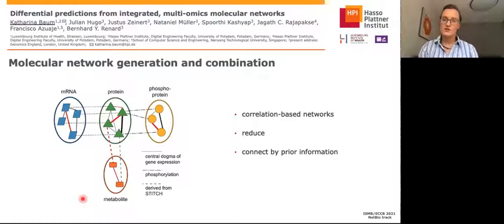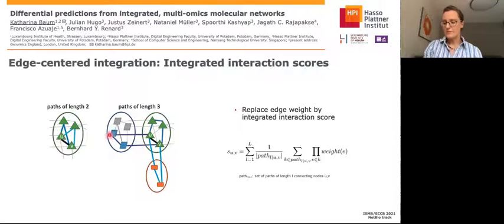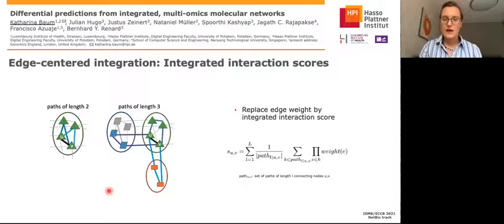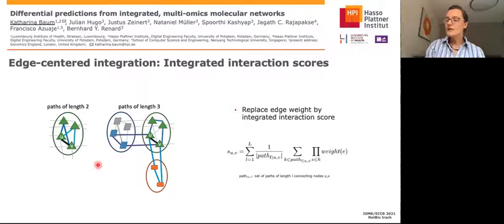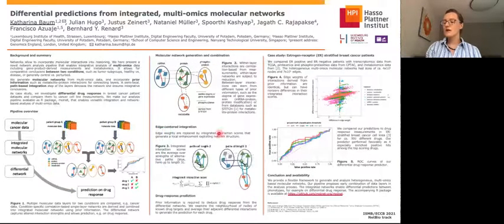Now we have our heterogeneous multi-omics networks for condition A and condition B, but they are still a bit noisy. So in order to denoise them, we use the so-called integrated interaction scores. Instead of going with the raw edge weight, we replace it with a more smoothed-out version by integrating over different layers. For two nodes, we consider all paths of length 1 — that would be the edge itself — of length 2, here in blue, and of length 3, also denoted in shades of blue, that are alternatives, and measure the path strengths of these alternative paths. We add up all those averages and get a number between minus 3 and 3 in the end. These are the networks we base our predictions on, from which we generate the differential network and make differential predictions.